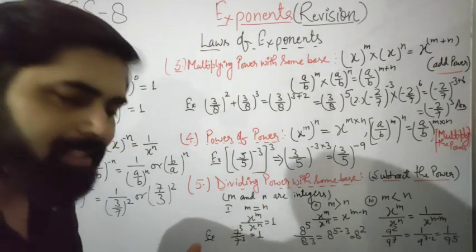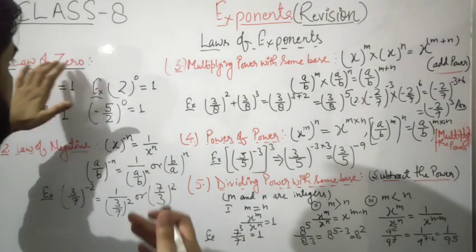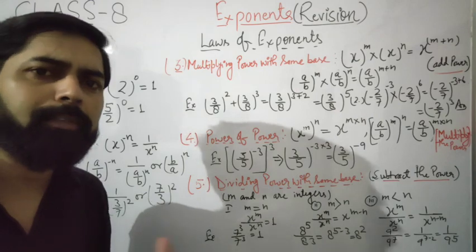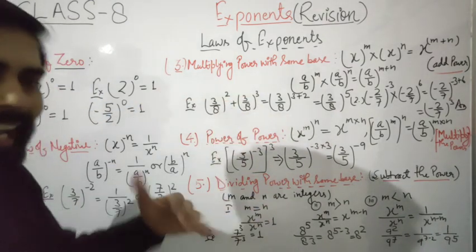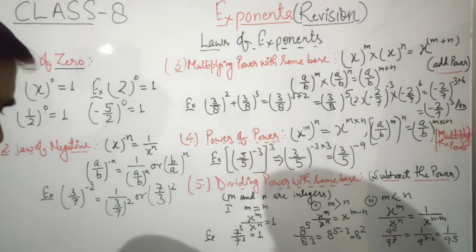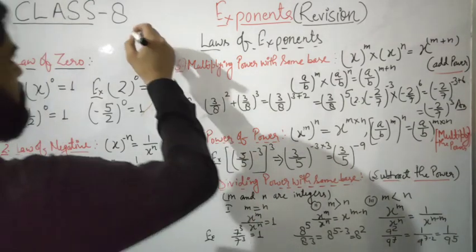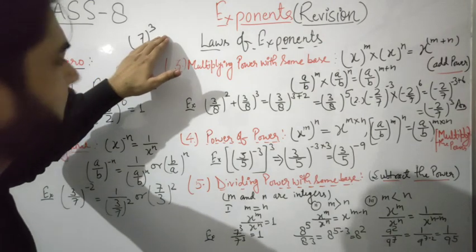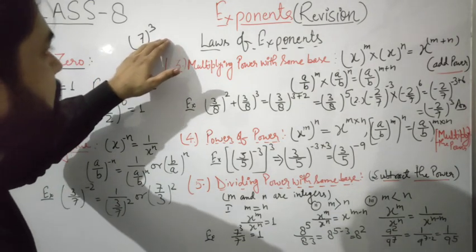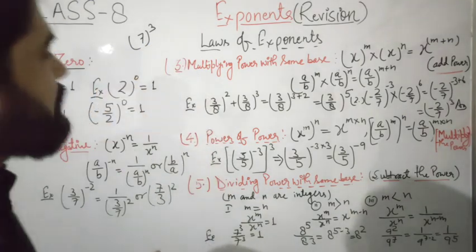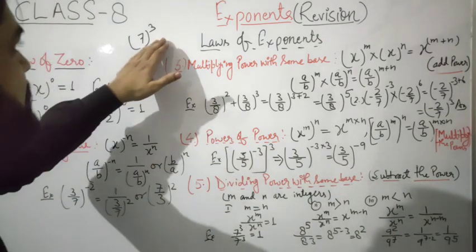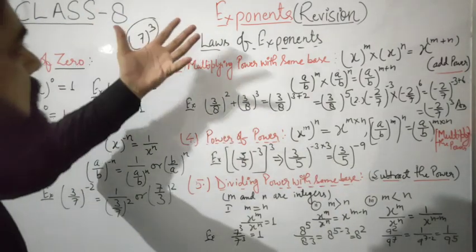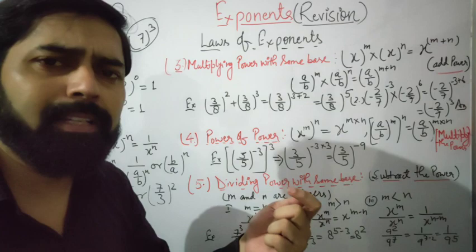Now, the first law is the zero law. What does this mean? You know what an exponent is and how we write a number in exponential form. For example, seven raised to the power three — we read this as 'seven raised to the power three.' This is the exponential form, and seven to the power three means seven multiplied three times.